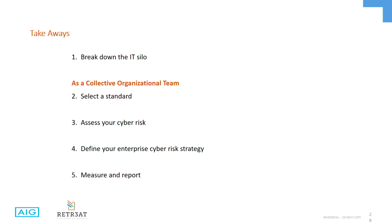Pick a standard — whatever framework you have to adhere to or prefer — but pick one that you're going to follow. Don't think that is the end-all be-all, but focus on it as a start. Assess your risk: where are my critical assets and data, what's the impact, and prioritize accordingly. Define your strategy collectively, hopefully at the executive level where you will have executive buy-in and support, because that means your culture is going to improve, everybody's going to be on the same page, and you're moving together as an organization to protect the business. And then lastly, measure and report — that's where businesses struggle the most.